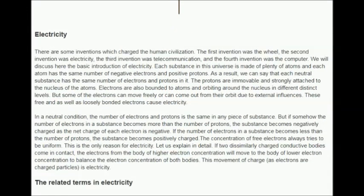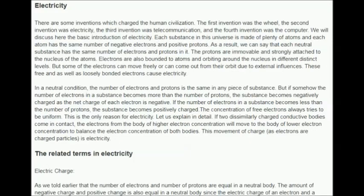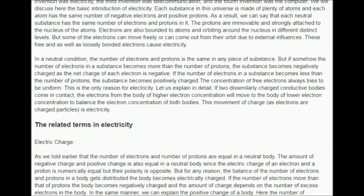There are some inventions which changed human civilization: the first invention was the wheel, the second was electricity, the third was telecommunication, and the fourth was the computer. We will discuss here the basic introduction of electricity. Each substance in this universe is made of plenty of atoms, and each atom has the same number of negative electrons and positive protons. Each neutral substance has the same number of electrons and protons. The protons are strongly attached to the nucleus, while electrons orbit the nucleus at different distinct levels. Some electrons can move freely or come out from their orbit due to external influences, and these free and loosely bonded electrons cause electricity.